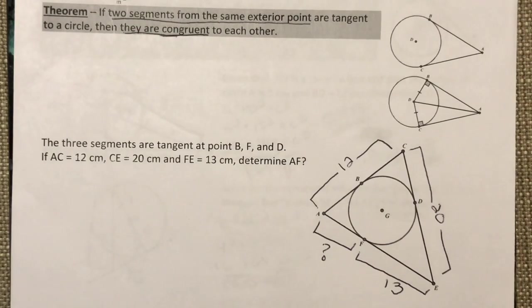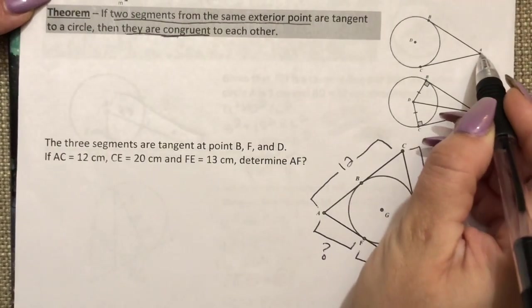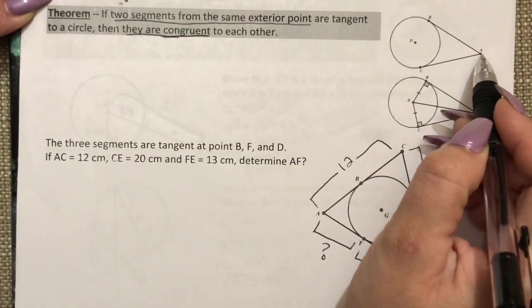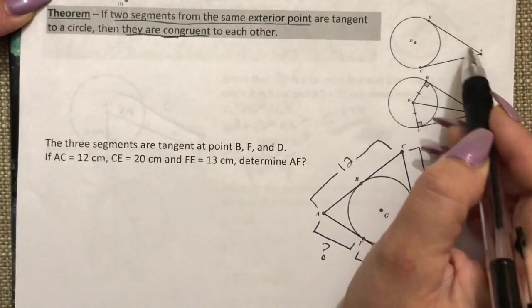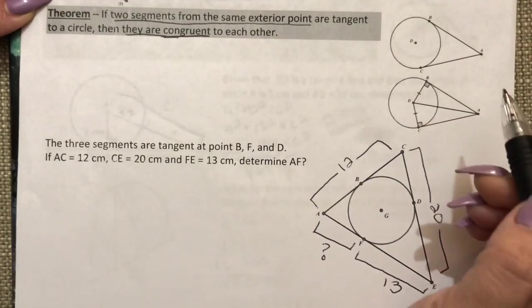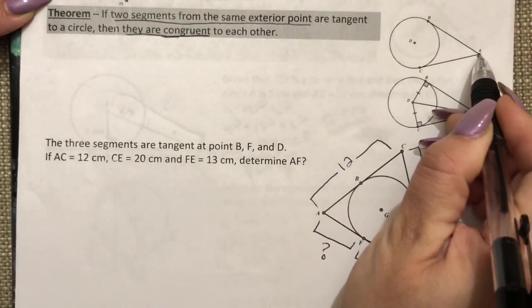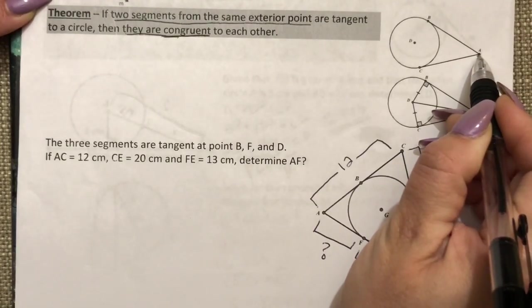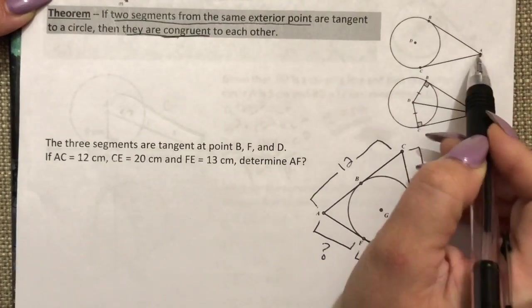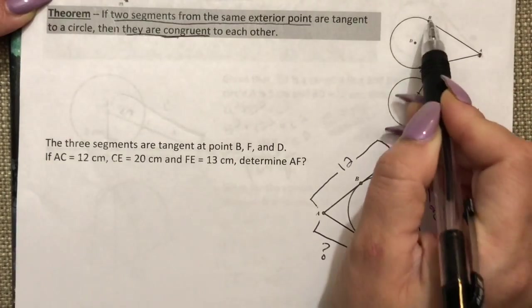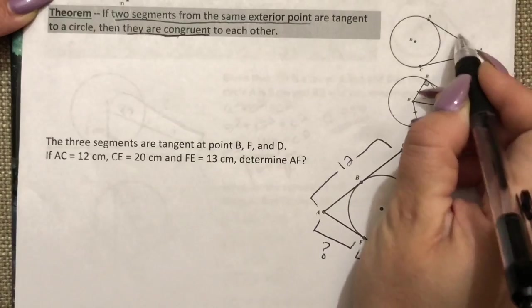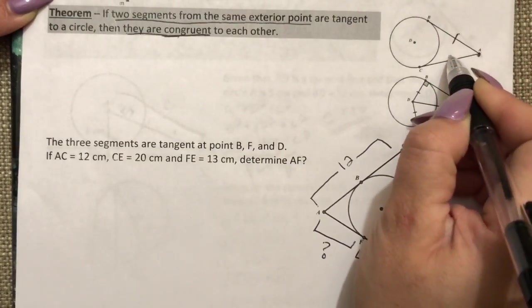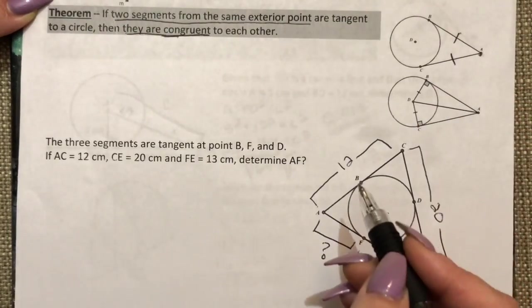Here we learned that if two segments from the same exterior point, like you see here, if two segments from the same exterior point are tangent to a circle then they are congruent. So here I see point A which is an exterior point, and I have two lines both of which are tangent to this circle. So that means that this side must be congruent to that side.